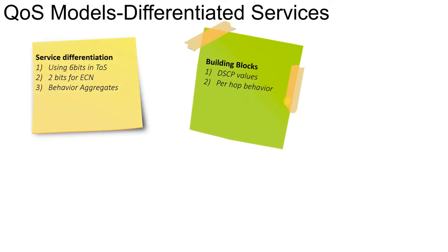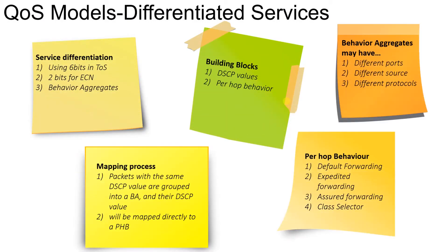The building blocks of differentiated services consist of two parts. The first one is DSCP values. DSCP is taken from the IP header's Type of Service field, which is an 8-bit field. DSCP takes six bits from the Type of Service field and classifies different services. Since 2 to the power of 6 equals 64, there are 64 different kinds of services or classes in the DSCP value.